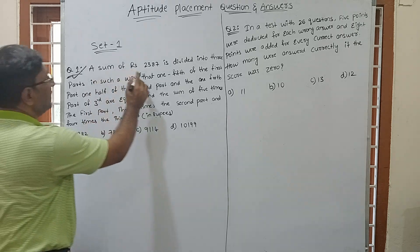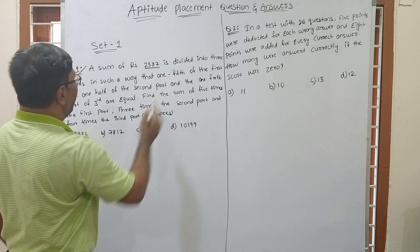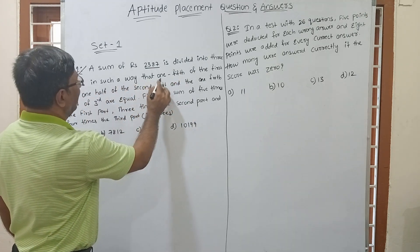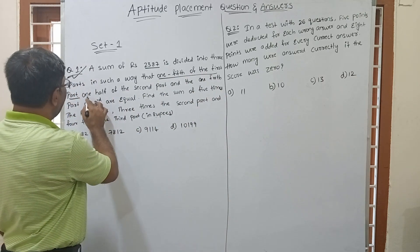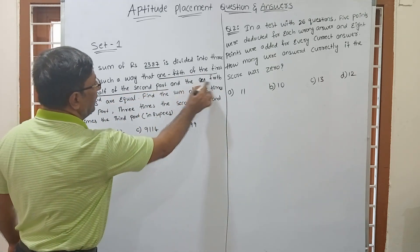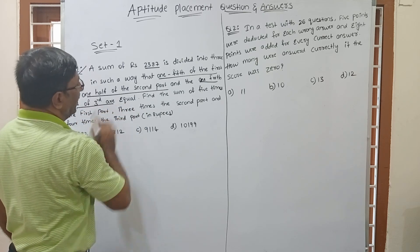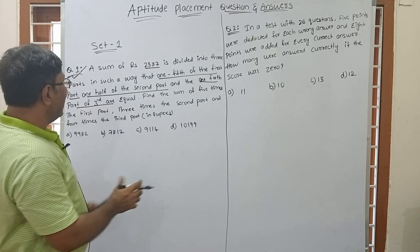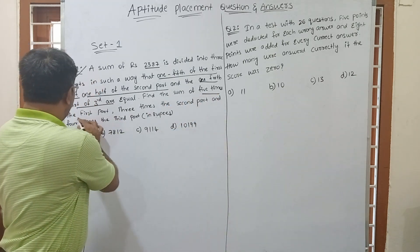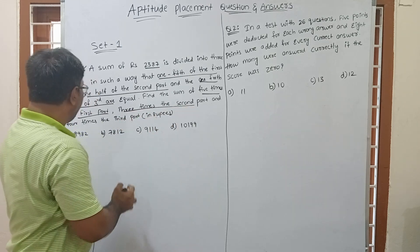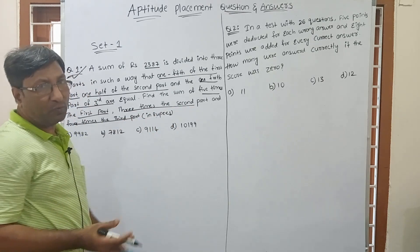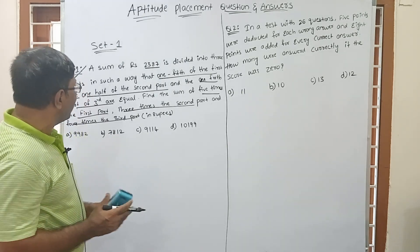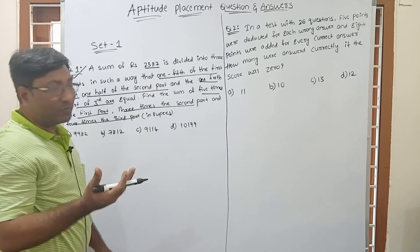This is the first question: a sum of 2387 is divided into 3 parts in such a way that one-fifth of the first part, one-half of the second part, and one-fourth of the third part are all equal. Find the sum of five times the first part, three times the second part, and four times the third part.